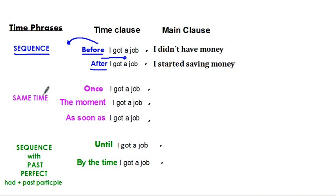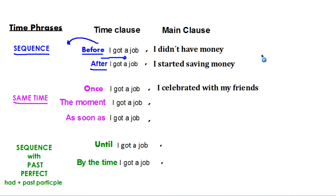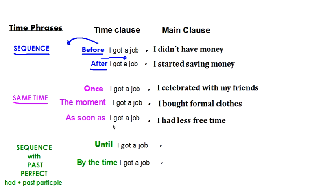When I want to talk about two things that happen almost at the same time, I can use things like 'once,' 'the moment,' and 'as soon as.' We use these for two things that happen almost at the same time, or the second action happens almost immediately after the first one. So if I say 'once I got a job, I celebrated with my friends' — almost immediately after I got a job, I celebrated. 'The moment I got a job, I bought formal clothes.' Or 'as soon as I got a job, I had less free time.' Sometimes this action cannot happen until this action happens.